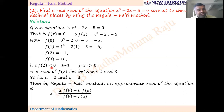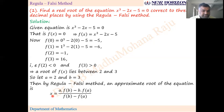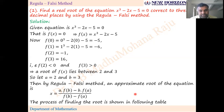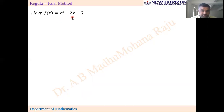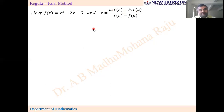After finding x, check the sign of f(x). If it is positive, take this x value as b and repeat the procedure with a the same. If f(x) is negative, take this x as a and keep b the same, then repeat. Continue this process and show it in tabular form. The table uses columns: a, f(a), b, f(b), x, and f(x). f(x) = x³ − 2x − 5 and x = [a·f(b) − b·f(a)] / [f(b) − f(a)].